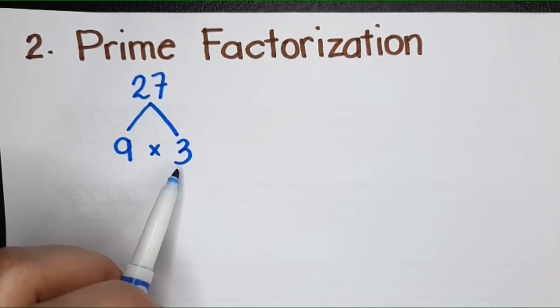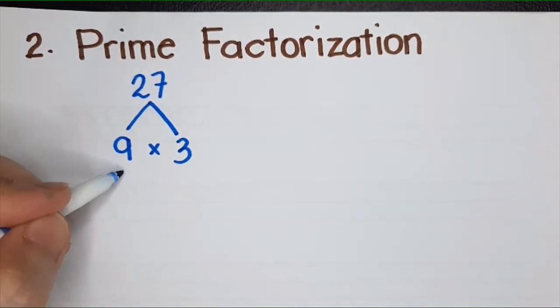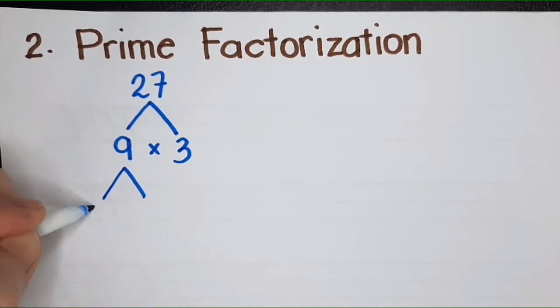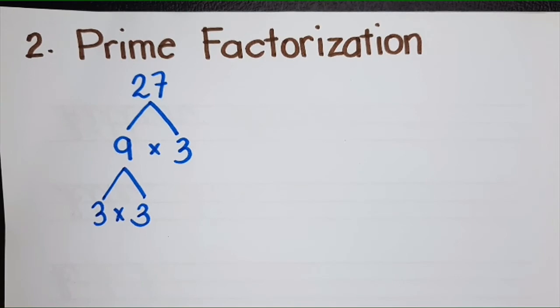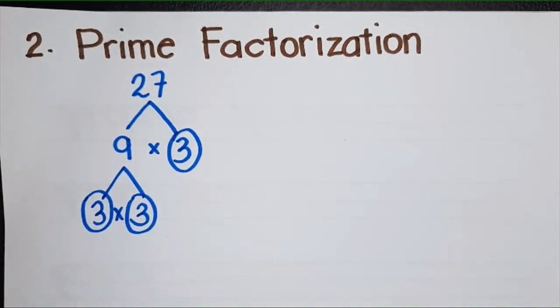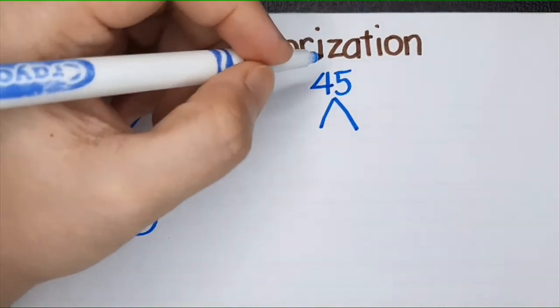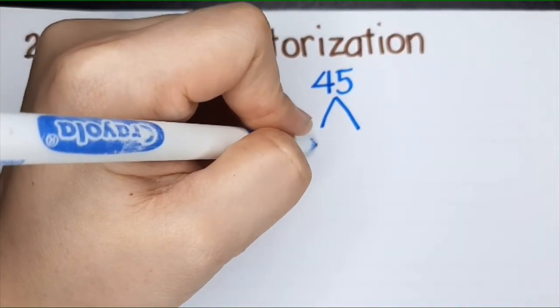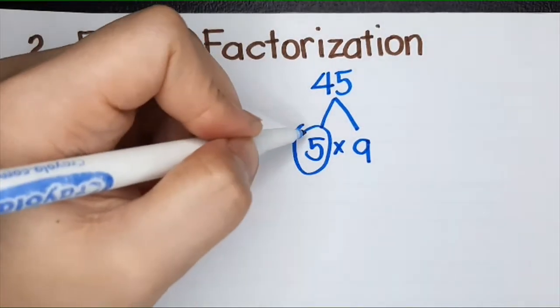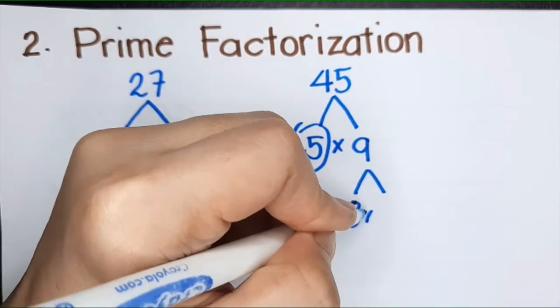3 is a prime number because the only factors of 3 are 1 and itself, 1 times 3, so you stop here. But 9 is not a prime number, so you continue. 9 is 3 times 3, and you stop here because they are all prime numbers. The second number is 45. Think of two numbers when multiplied the answer is 45. 5 times 9.